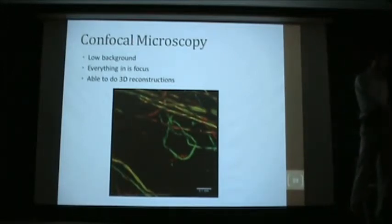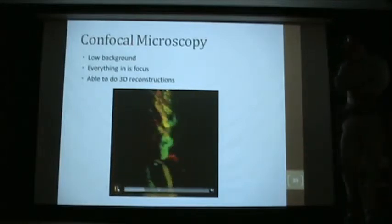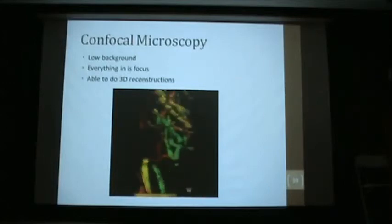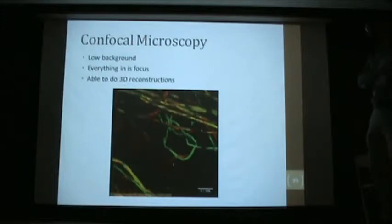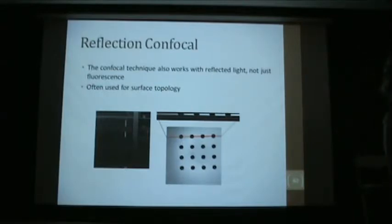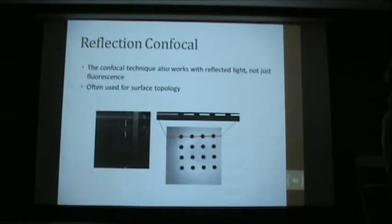Confocal microscopy gives very low background because we're only looking at a single Z plane at a time, and you end up with everything in focus so you can do a 3D reconstruction — for example, cotton fibers that are fluorescently dyed can be reconstructed in 3D. You don't have to do confocal with fluorescence — you can also do it with reflected light, using the pinhole to reject light reflected from above or below the plane of interest. Here's silicon through-hole gears: we can see the XY image and a Z slice across the gears to measure their depth.